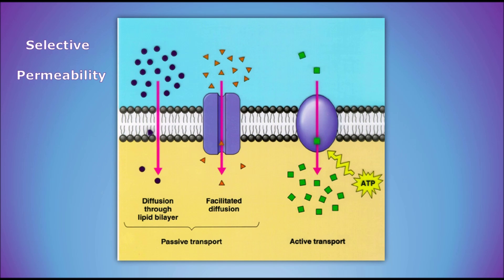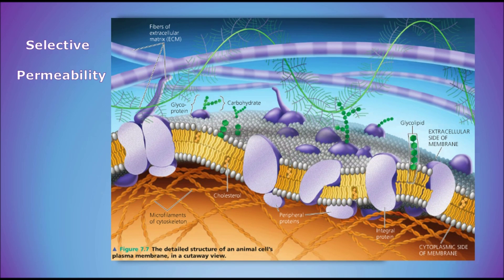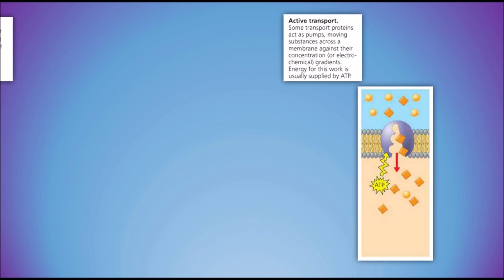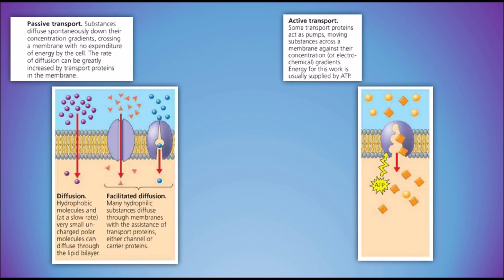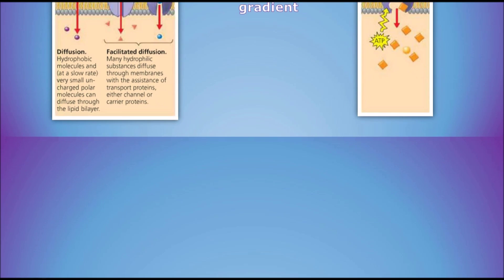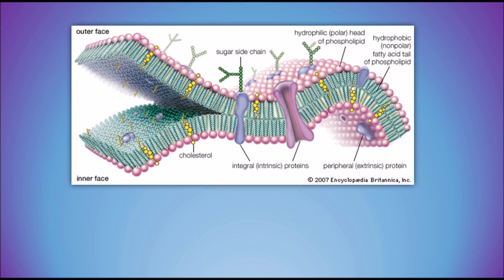Selective permeability, fluid mosaic, yeah it's the cell membrane. Active and passive transport, all powered by not one force, two force electrochemical gradients. All divided by the cell membrane.